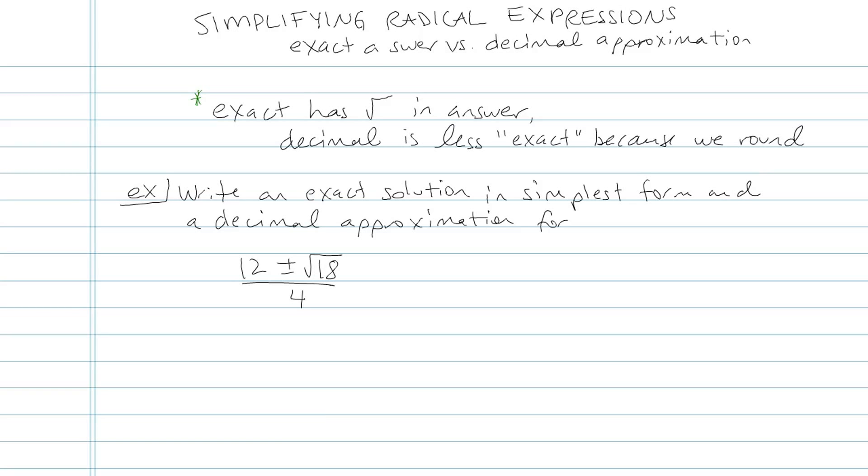For example, if I were to type into my calculator square root of 2, I would get 1.41421356, but of course I'm not going to write that on my paper. I would just write 1.41 on my paper.